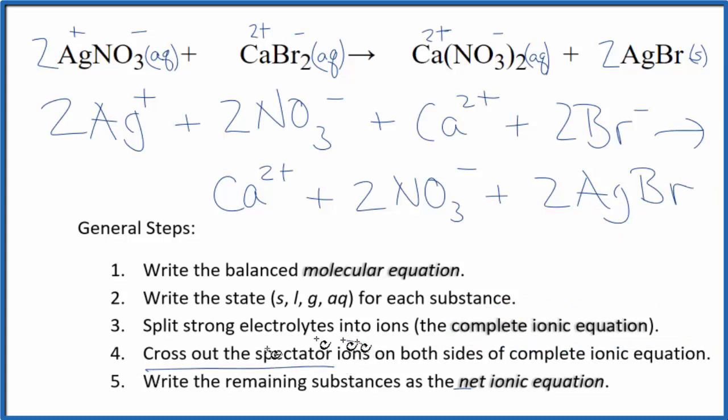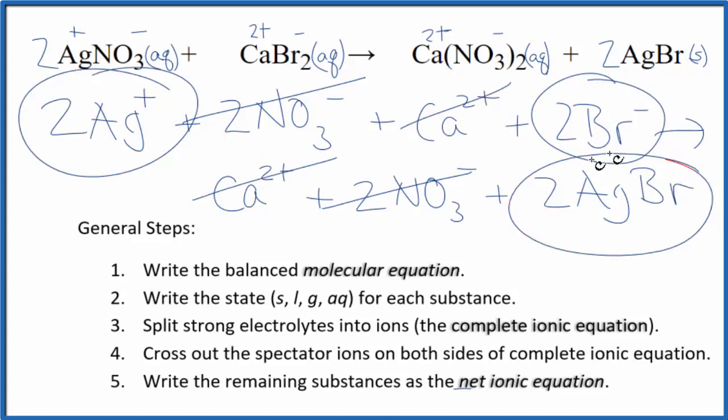We can cross out spectator ions now. They're on both sides of the complete ionic. They haven't changed, so we're really not interested in them. In the reactants, I have two nitrates. In the products, I have two nitrate ions. We can cross those out. I have a calcium ion here, and then in the products, calcium ion - cross it out. What remains is the net ionic equation for AgNO3 plus CaBr2.